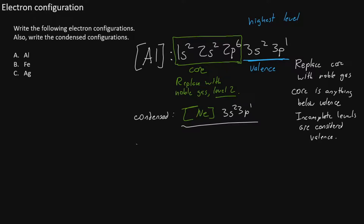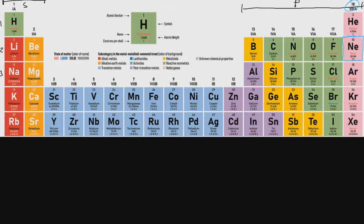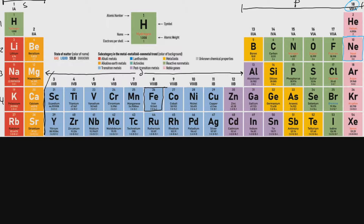Now let's try the same approach with iron. We go to the periodic table and locate iron on the fourth level, inside the block in the middle called the D block. The D block is different from the P or S sections — when we cross into the D block, we go down one level. So starting on level 4, when we cross into the D block, we drop down to level 3 temporarily. If we exit the D block into gallium, we go back up to level 4.